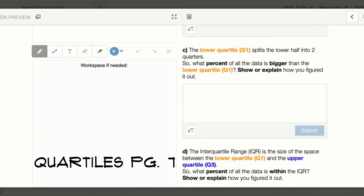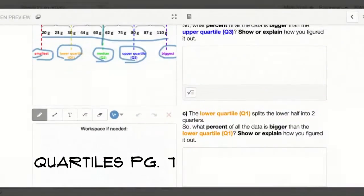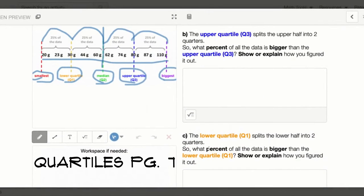Letter C: The lower quartile Q1 splits the lower half into two quarters. So what percent of all the data is bigger than the lower quartile Q1? Show or explain how you figured it out.